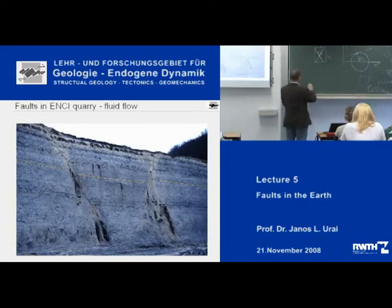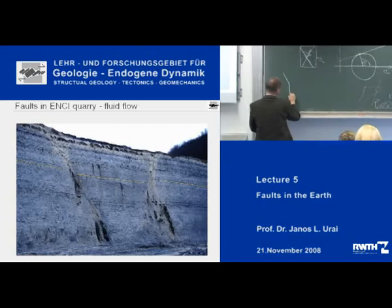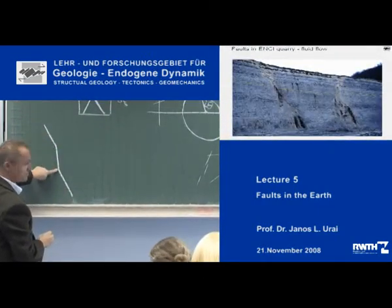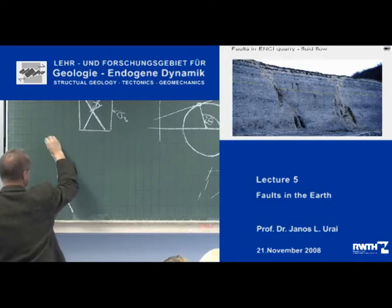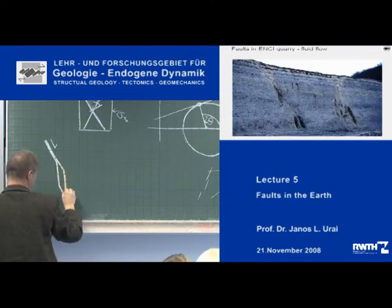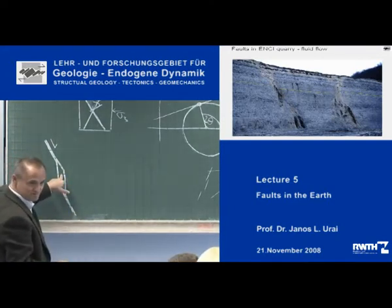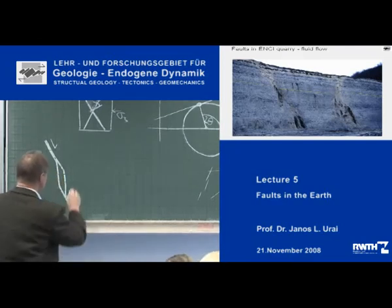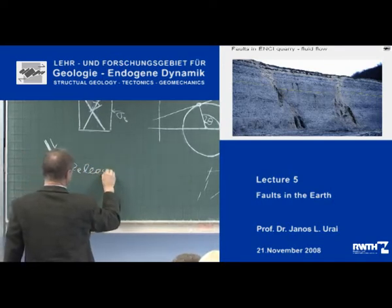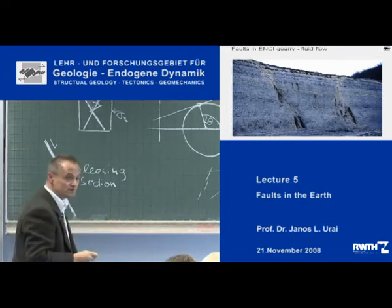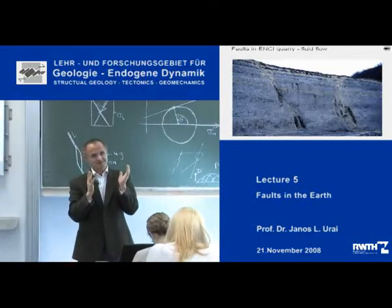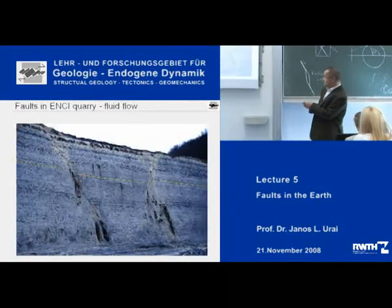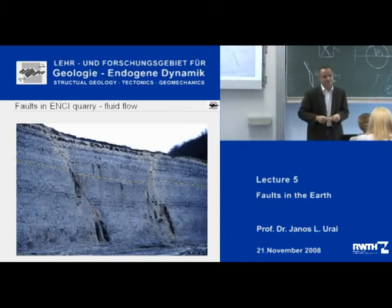I will draw it for you. The fault is like this — there are parts which are not so steep, parts which are steeper, and then parts which are not so steep again. If I move this fault, then by geometry I open up this part. These are the releasing sections of the fault, and if the rock is able to make this open fracture, then this will be the place where fluids are flowing. And that is exactly what you see here — this is where the water is coming out of the rock.